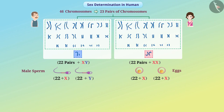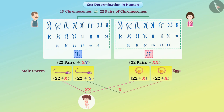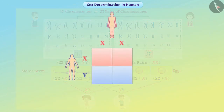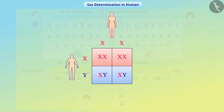During fertilization, if the sperm with the X chromosome fuses with the egg containing the X chromosome, the sex chromosomes of the zygote will be XX, which will develop female traits. But if the sperm with the Y chromosome fuses with the egg containing the X chromosome, the sex chromosomes of the zygote will be XY, which develops male traits. Since half of the sperms have X and half have Y, the probability of a zygote being male is the same as that of being female.